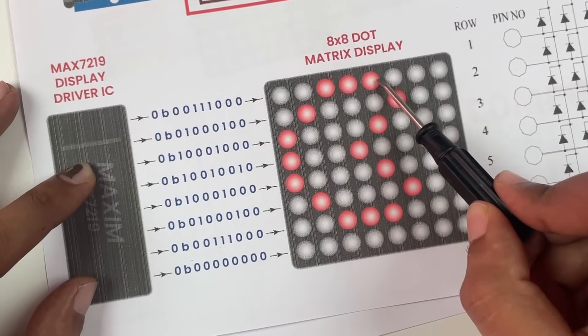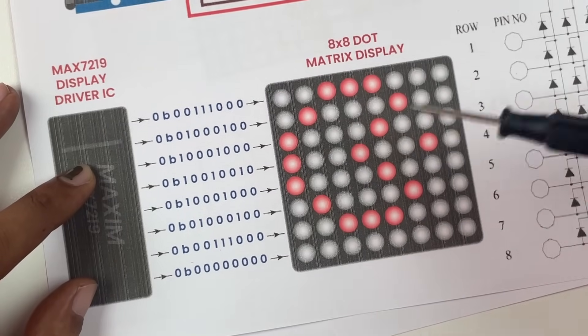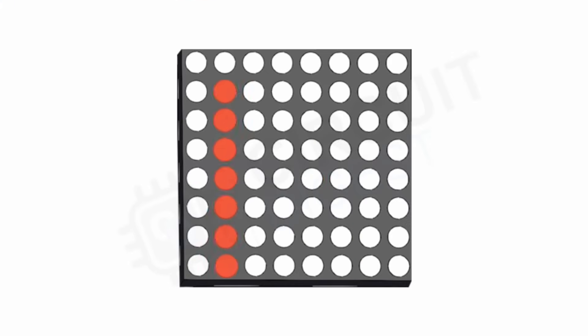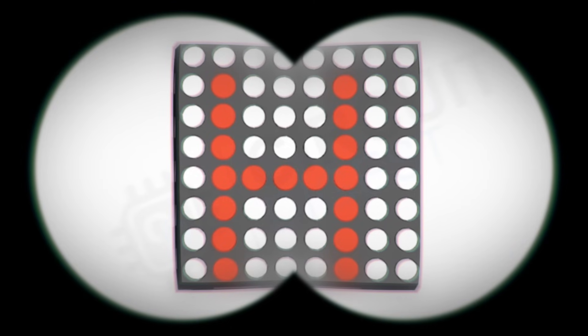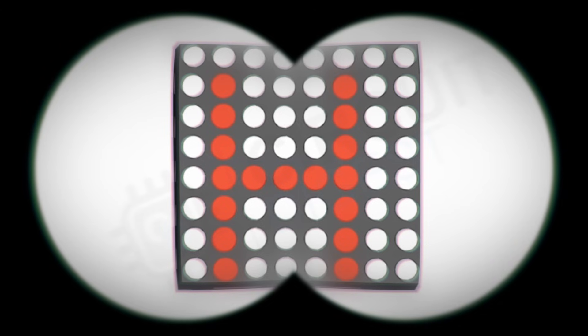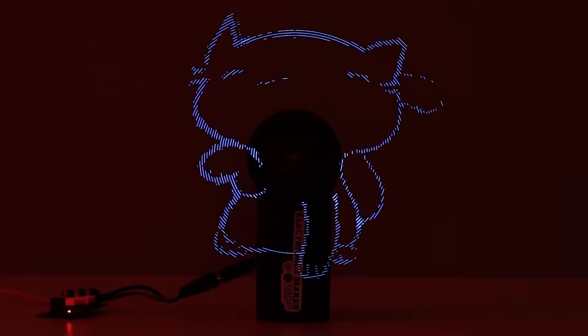Now another question which might arise is how are we able to control all these rows and columns simultaneously? The answer is we are not controlling it. Take a look at this animation. You can see that we are trying to display the letter H on this module, but we don't do it straightforward. We will be doing it one row at a time, and when we do it really fast enough our human eyes will not be able to detect that it is being turned on and off very fast, and it appears like we are seeing a single letter H on the display module. This technique is called multiplexing and it is very commonly used in LED cubes, POV displays, and other projects.